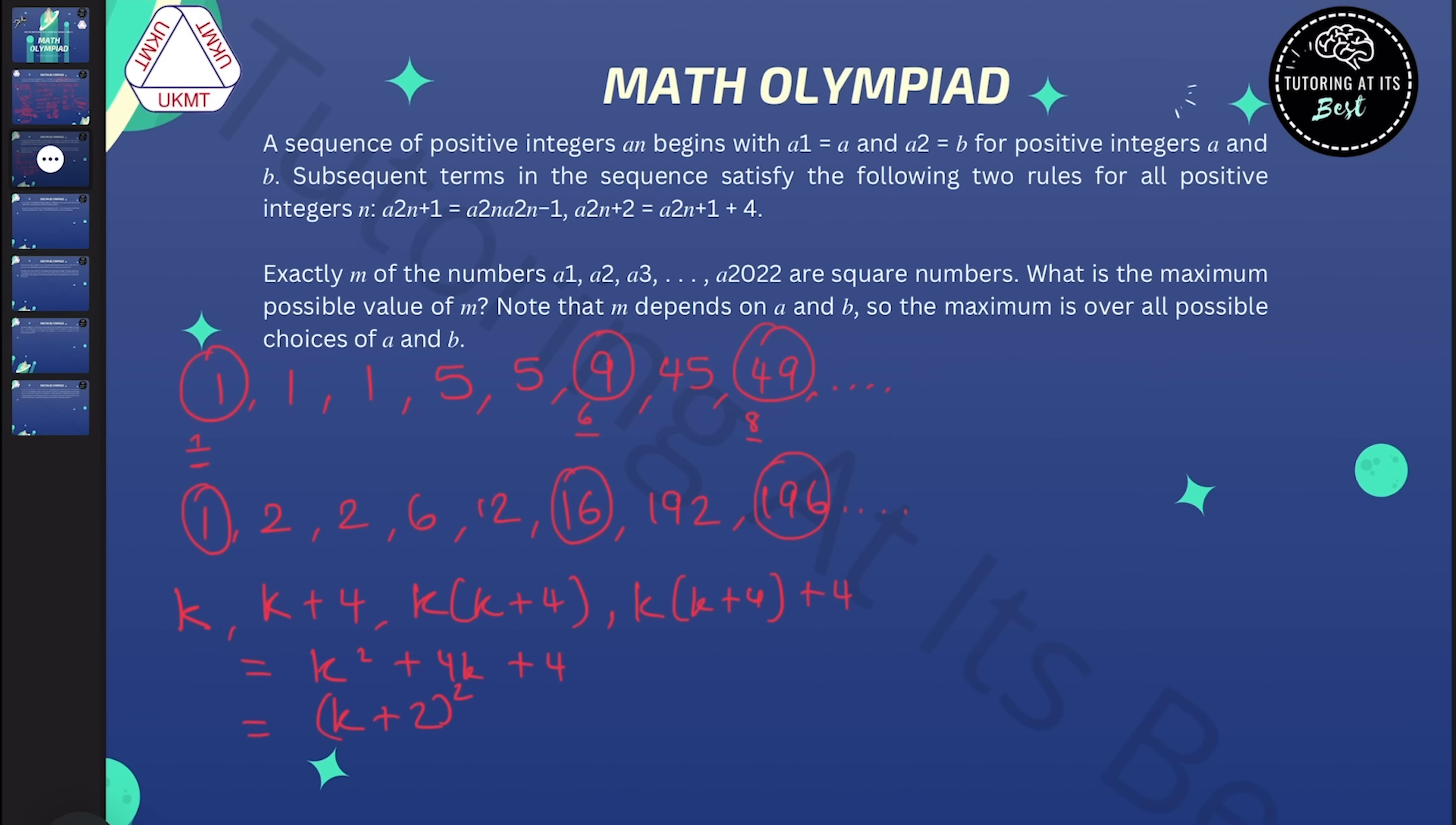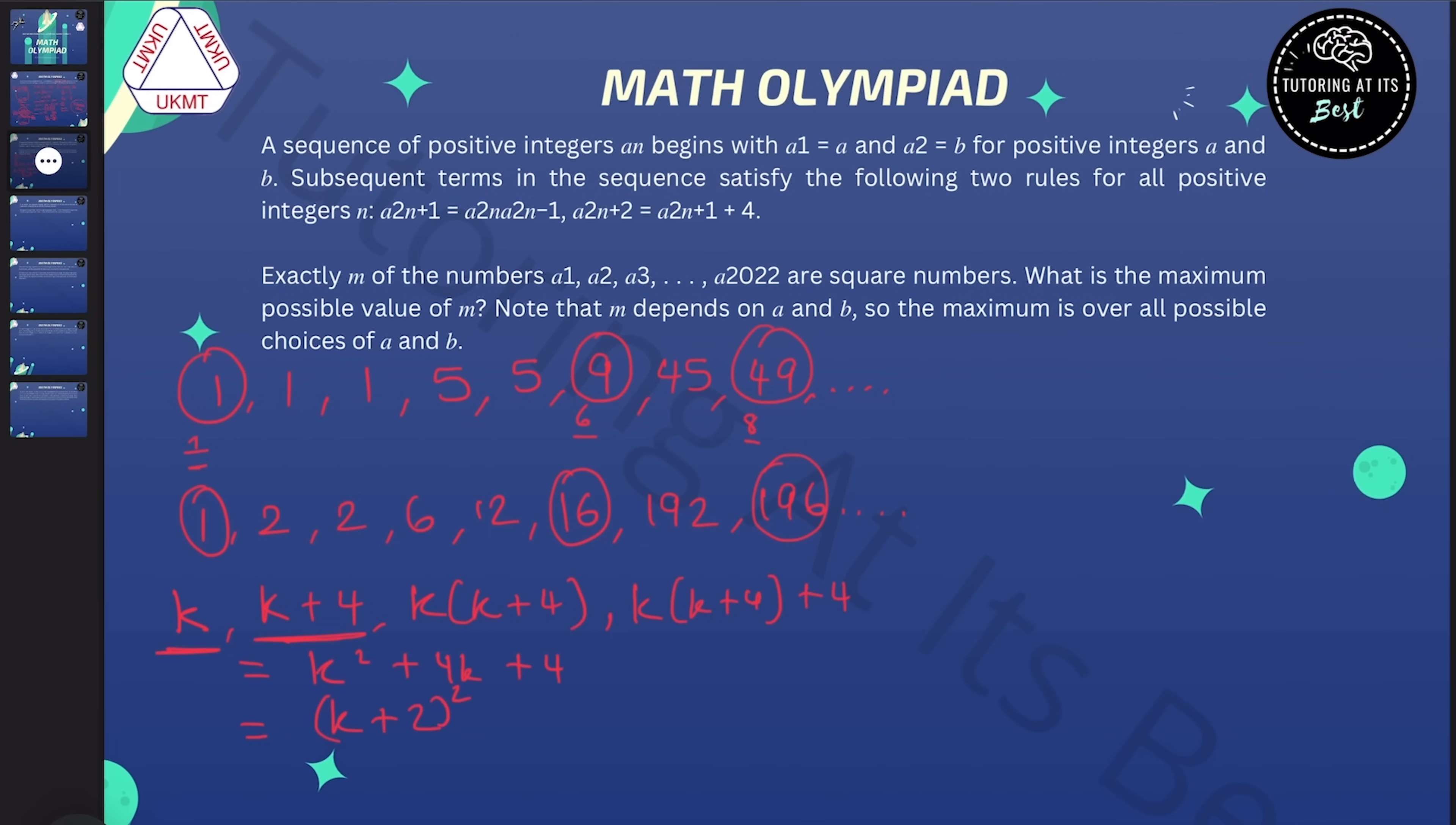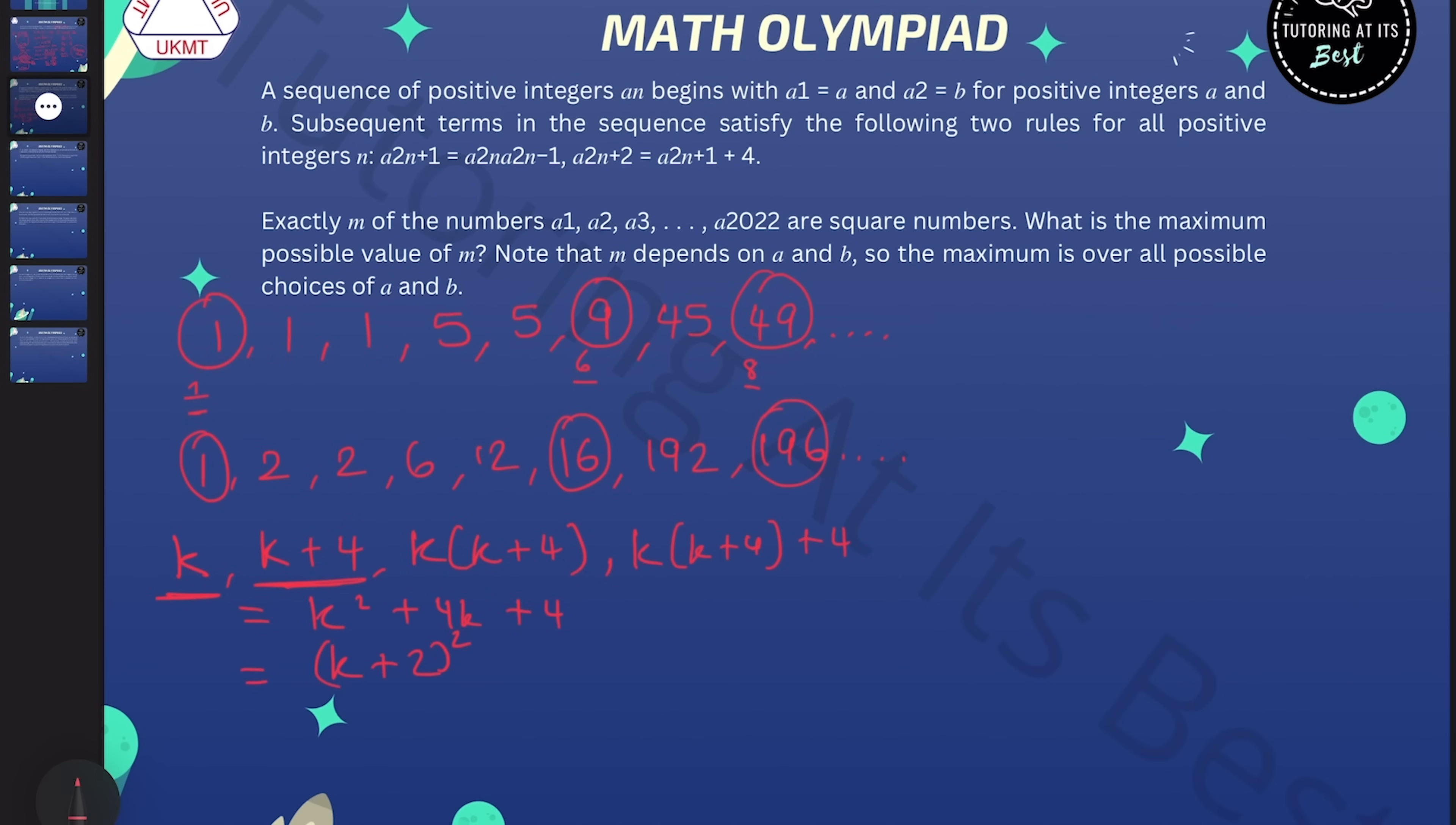And that in fact proves that every even term after the sixth term is a square. Because the third and the fourth term in this format, given that the sixth term is a square, the fifth and the sixth term is also going to be of this format, giving the eighth term a square. And the seventh and eighth term in this format will then give you the tenth term as square. So what we've done here is we've proved that starting with the sixth term, every even term of the sequence is a square.